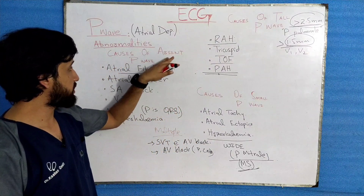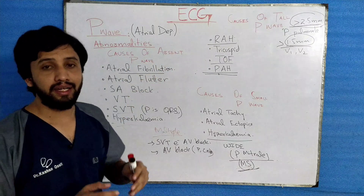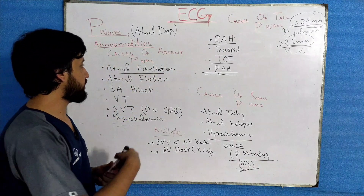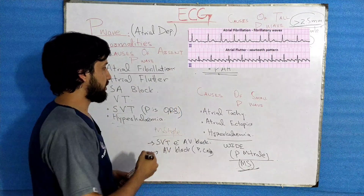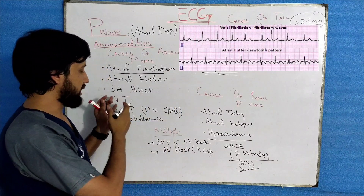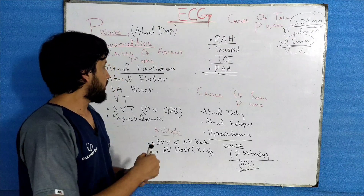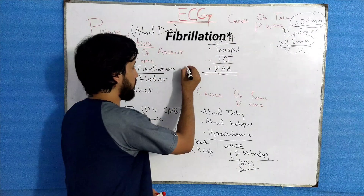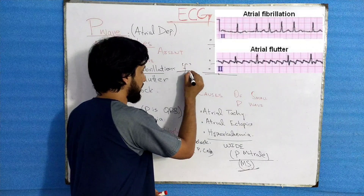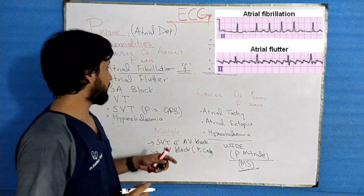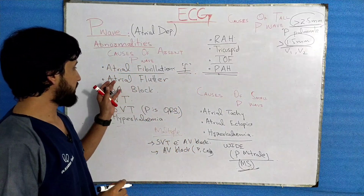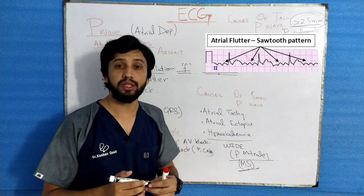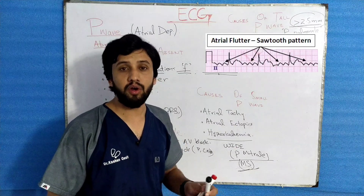Starting with the absent P wave abnormality, it is seen in the following conditions. Number one is atrial fibrillation, then atrial flutter, likewise SA block. In atrial fibrillation, the P wave is replaced by what we call the F wave or fibrillatory wave. In atrial flutter, there is also an absent P wave.